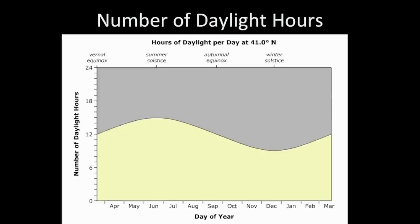So what are the causes? There are a few. One of them has to do with the number of daylight hours over the course of the year, and this is determined by where on the Earth you are. I am focusing on people who live in the continental U.S. in the Northern Hemisphere.